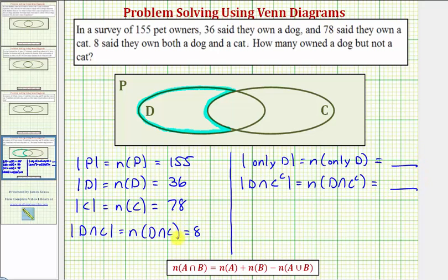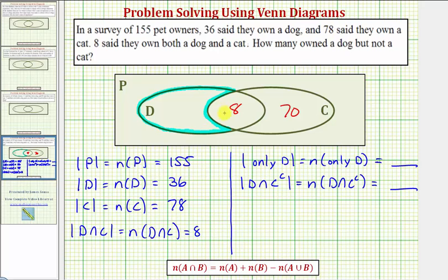Now we'll indicate how many elements are in each set from the given information. We'll start with the intersection: the number of elements in D intersect C is equal to 8, so there are 8 elements in this overlapping region. We know there are 78 elements in set C, but 8 of those are in the overlapping region, so 78 minus 8 leaves 70 elements that are only in C. There are 36 elements in set D, but 8 of them are in the intersection, and 36 minus 8 equals 28.